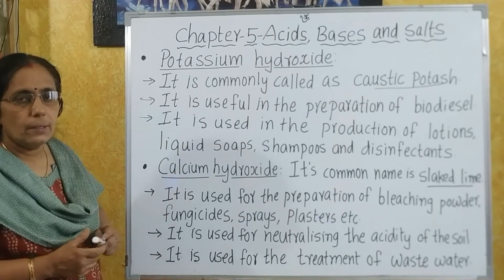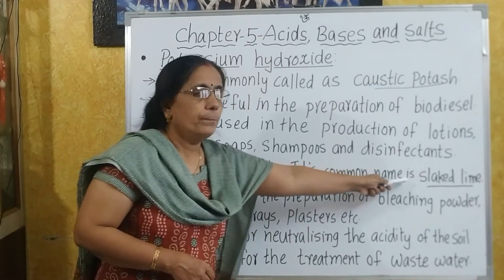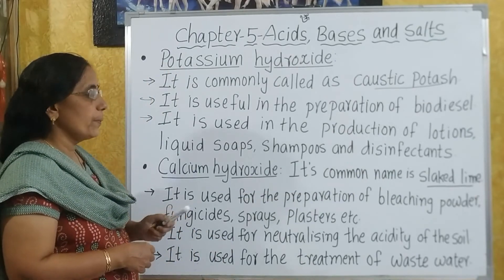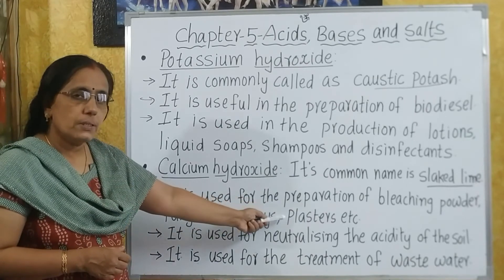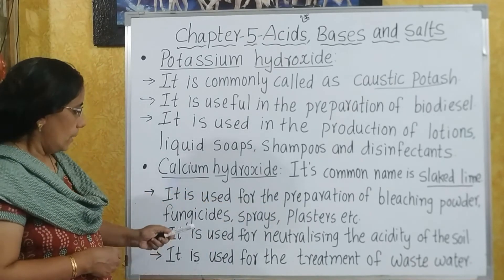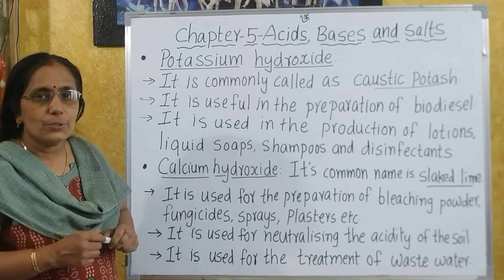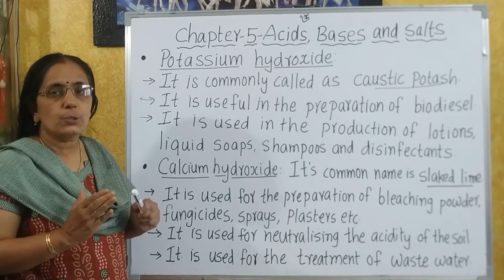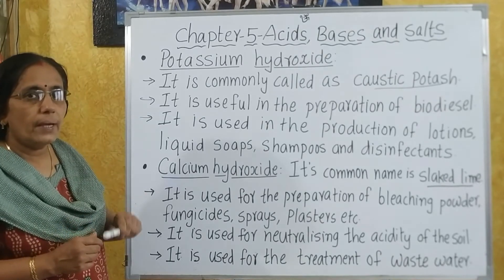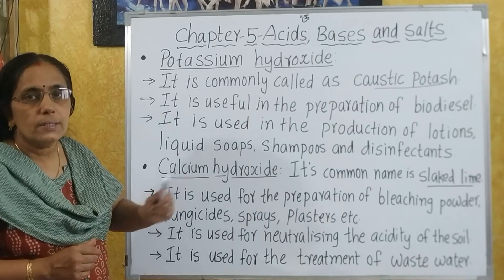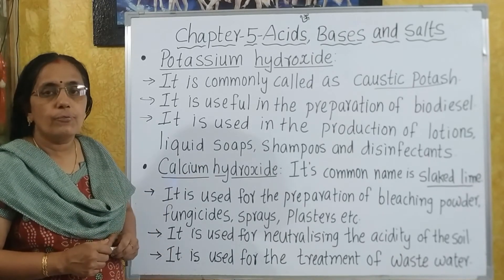Next, calcium hydroxide. The common name for calcium hydroxide is slaked lime. It is used for the preparation of bleaching powder, fungicide sprays, plasters, etc. It is also used in neutralizing the acidity of the soil — if a particular soil contains more acidic components, that can be neutralized by adding calcium hydroxide or slaked lime. It is also used in the treatment of waste water.